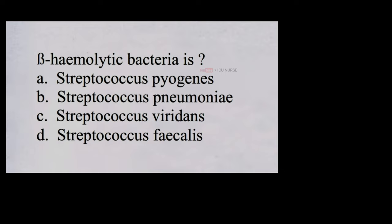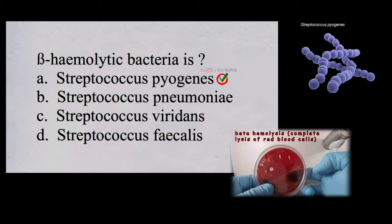Beta hemolytic bacteria is A. Streptococcus pyogenes, B. Streptococcus pneumoniae, C. Streptococcus viridans, D. Streptococcus faecalis. And the correct answer is A, Streptococcus pyogenes. Beta hemolytic bacteria are tiny organisms that when grown on special type of agar plate release substances that break open RBCs. This creates a clear area around them. Examples include Streptococcus pyogenes and Staphylococcus aureus.